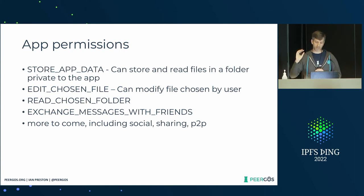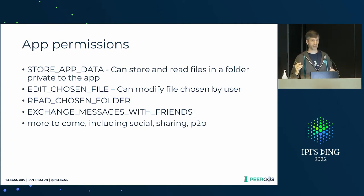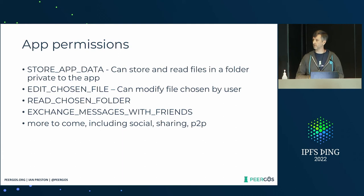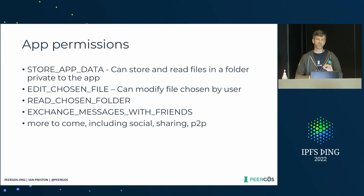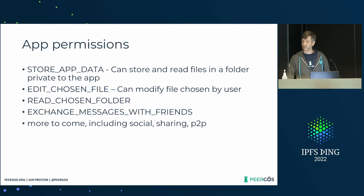It gets more interesting with the fourth permission, which is the ability to exchange messages with friends. We already have a chat protocol — it's encrypted, it's CRDT-based inside the encryption on top of Pygos — but the app doesn't have to know about that. It just says 'I want to create a chat with some friends who might have the same app installed,' and you can then send asynchronous messages. You could use that for multiplayer turn-based games, for example. It's not real-time so you can't use it for network Doom — we'll work on that one — but this is all hot off the press; we released this sandbox two weeks ago.